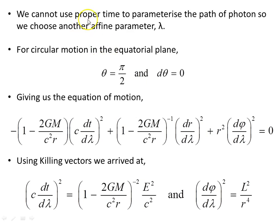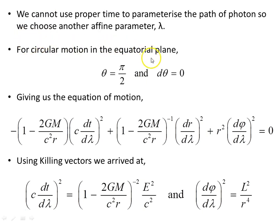We cannot use proper time to parameterize the path of a photon, so we choose some other affine parameter, which we'll call λ. The path taken by light has ds² = 0, which equals −c² dτ², so dτ² = 0. For circular motion in the equatorial plane, θ = π/2 and dθ = 0. When we apply that, the previous equation of motion reduces to the simpler expression shown here.